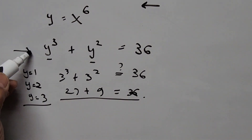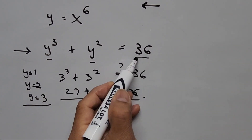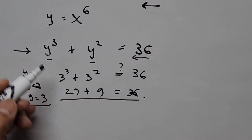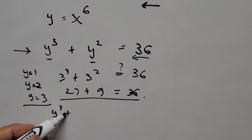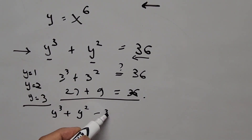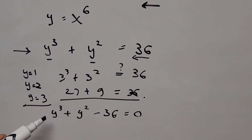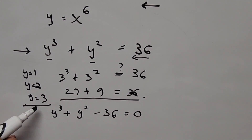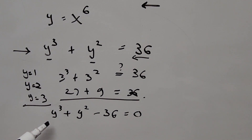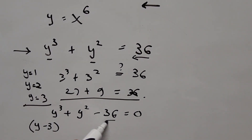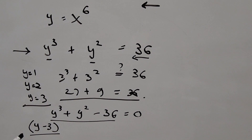We transform the equation into a cubic by moving 36 to the left side: y^3 + y^2 − 36 = 0, with the known root y = 3. Since this is a cubic, there are three values of y. To find the other two we perform polynomial long division, dividing y^3 + y^2 − 36 by the factor (y − 3).